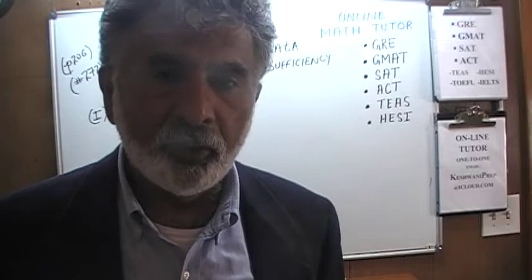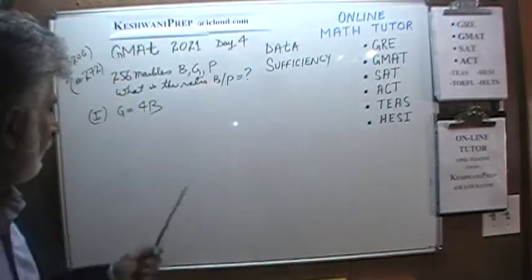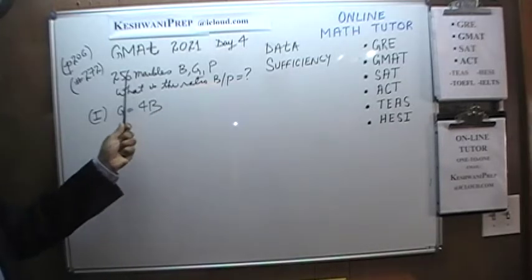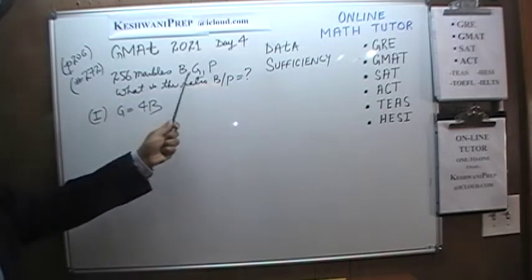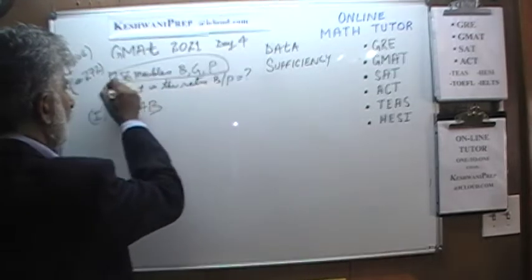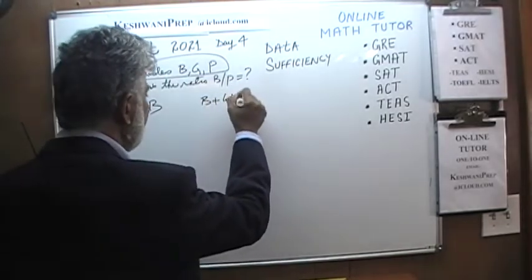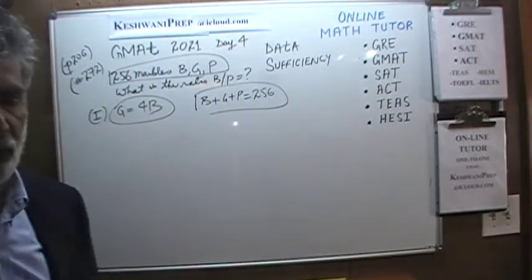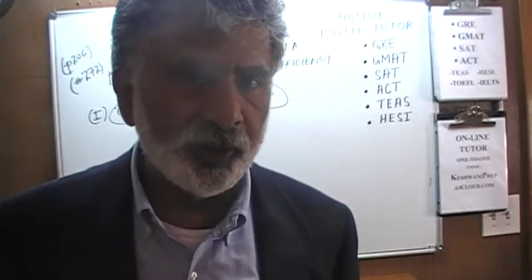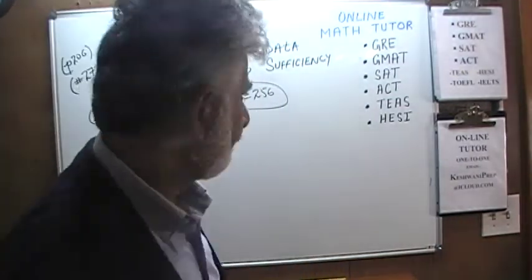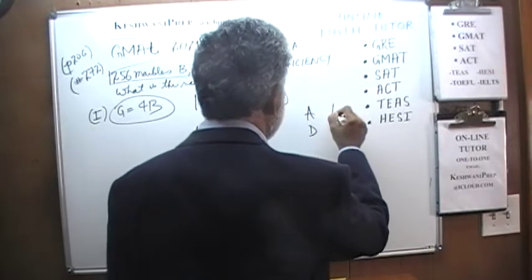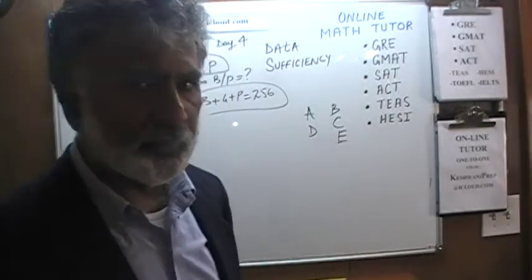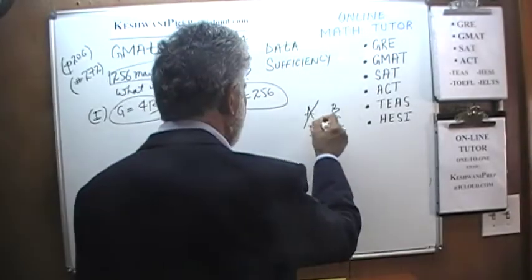We do not have enough information. This gives us one equation, and we also have b plus g plus p equals 256. That's two equations with three unknowns — we cannot solve for three unknowns with just two independent equations. The first statement by itself is not enough. Always write down A-D / B-C-E. Since the first statement is not enough, the answer cannot be A or D.